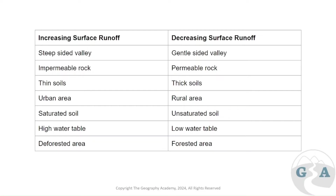Urban areas have impermeable surfaces — concrete, slates, roofs — all designed to increase surface runoff so water is pushed out of the area rather than absorbed. Rural areas tend to have more soil and vegetation, which allows more infiltration.